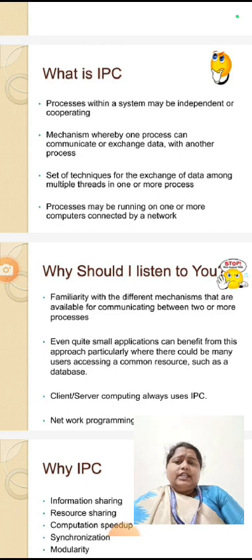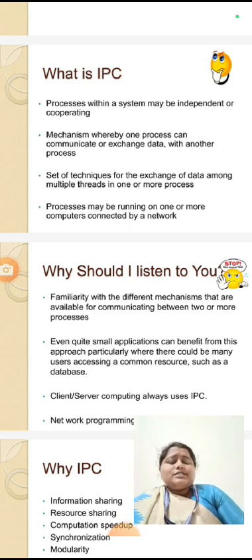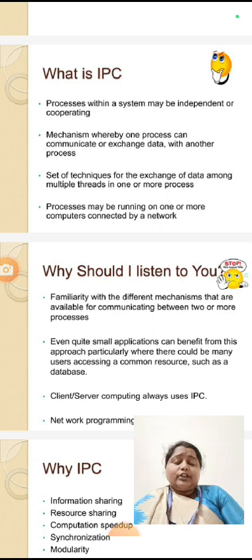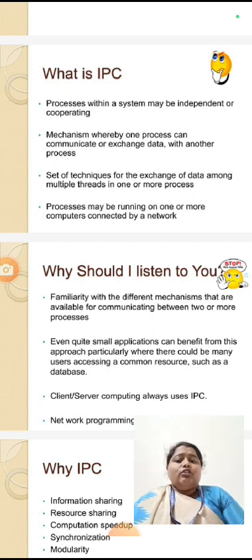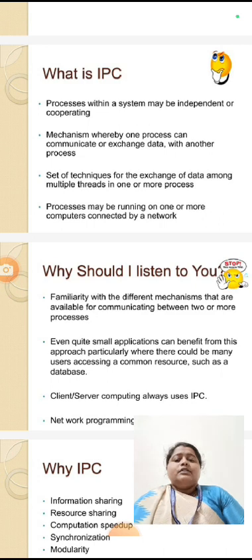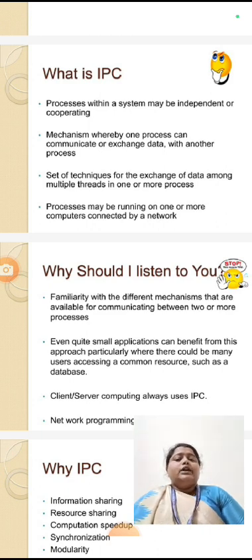Today we are going to see what is inter-process communication in client-server technology. First, we can see what is inter-process communication. The process within a system may be independent or cooperating. It is a mechanism whereby one process can communicate or exchange data with another process — a set of techniques for the exchange of data among multiple threads in one program or more processes. The process may be running on one or more computers connected by a network. This is called inter-process communication.